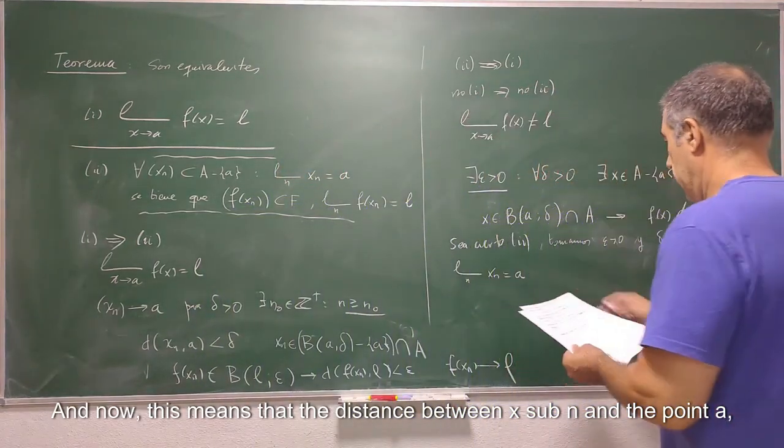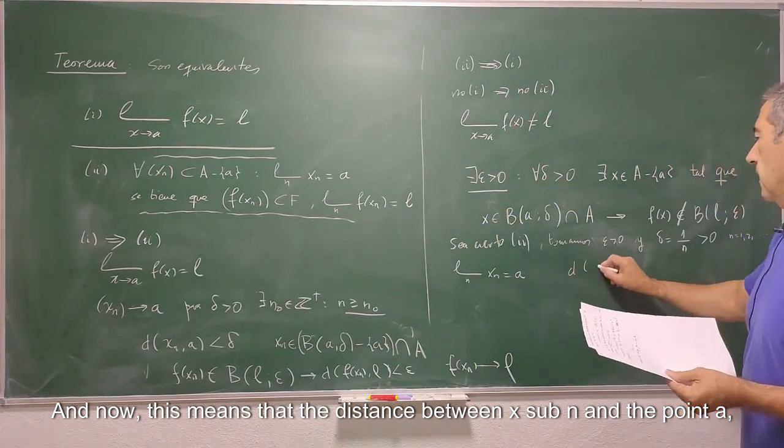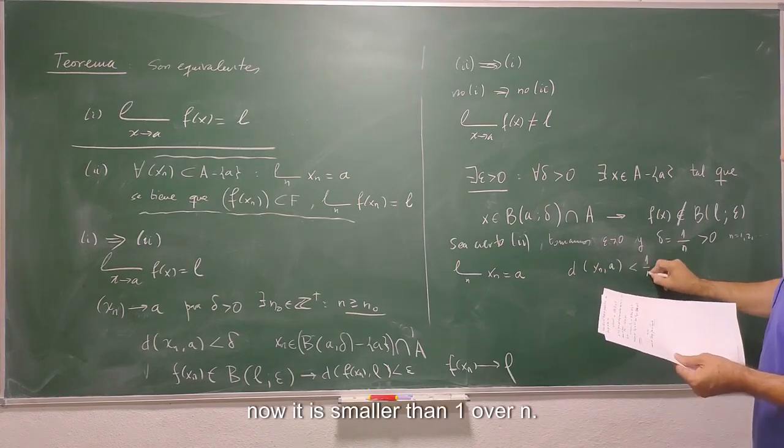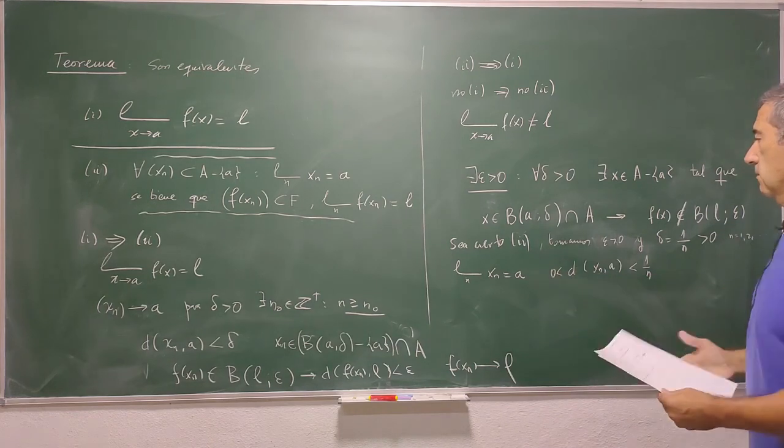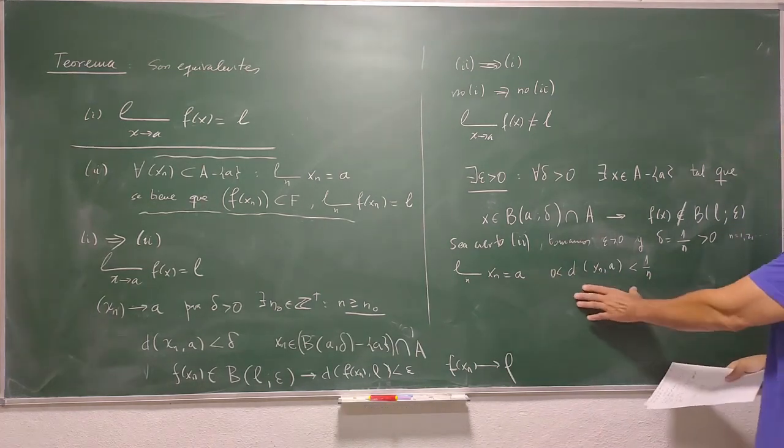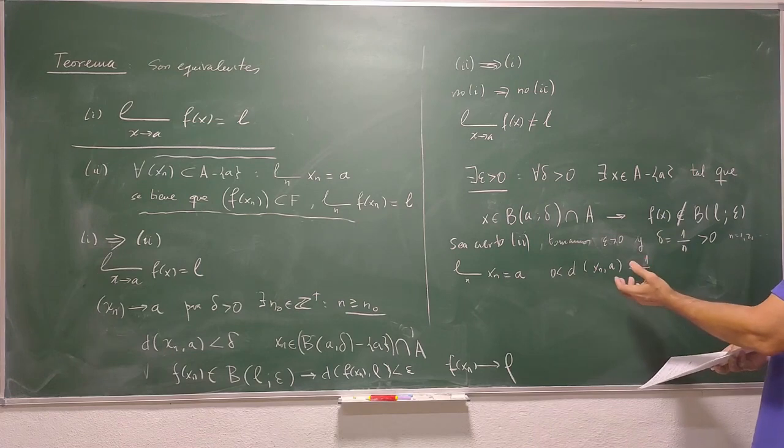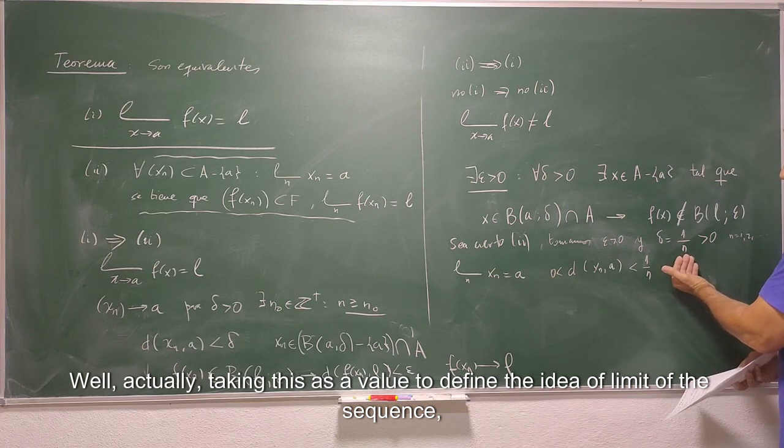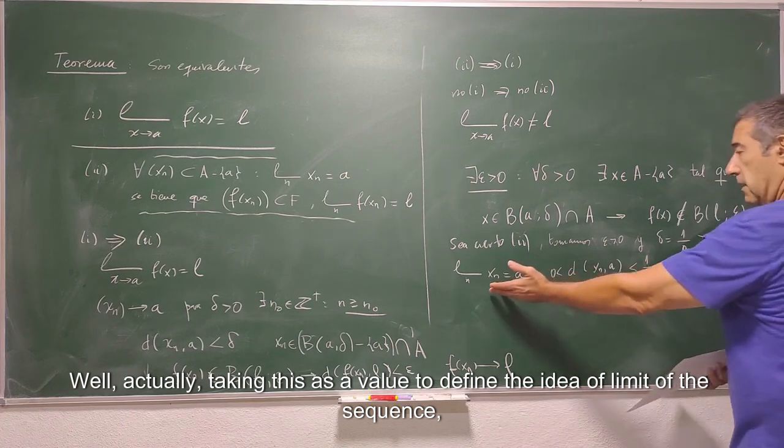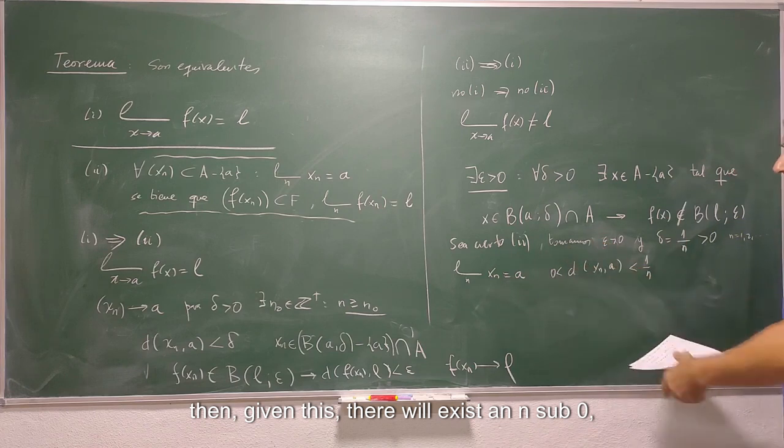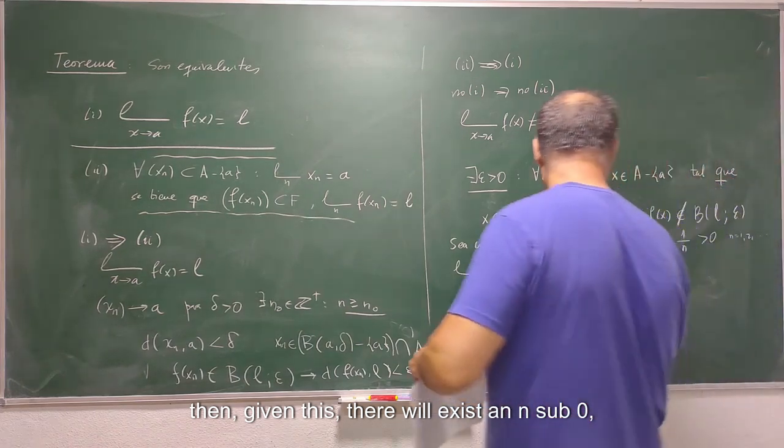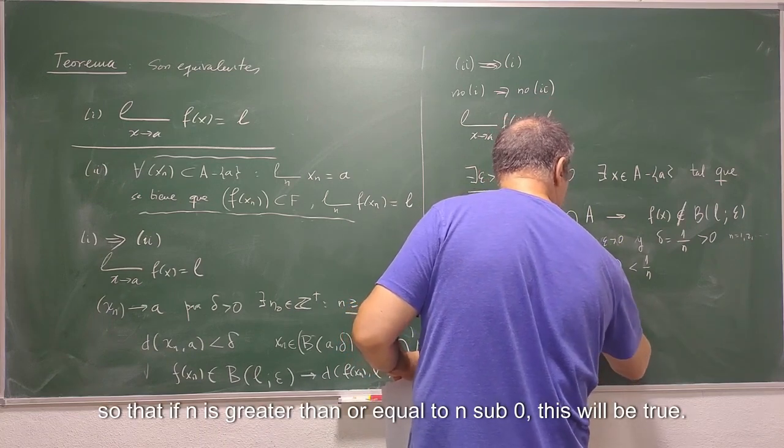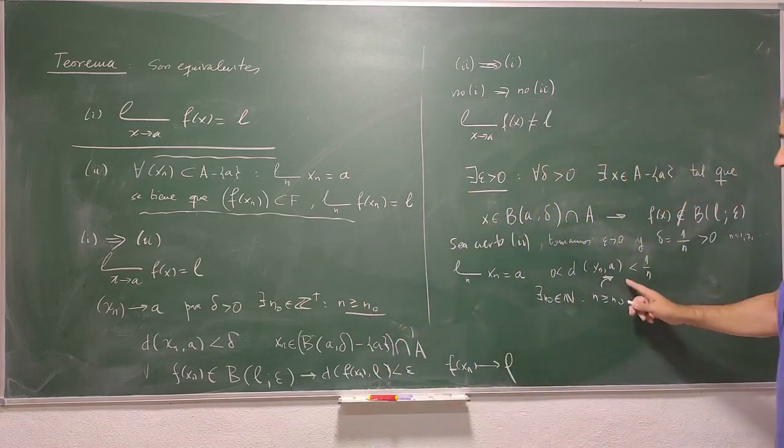And now, this means that the distance between x sub n and the point a, now it is smaller than 1 over n. Because? Well, actually, taking this as a value to define the idea of limit of the sequence, then given this, there will exist an n sub 0 so that if n is greater than or equal to n sub 0, this will be true. Okay? Do you see it?